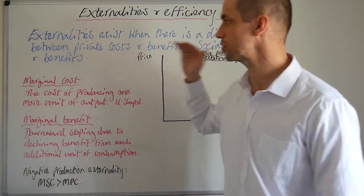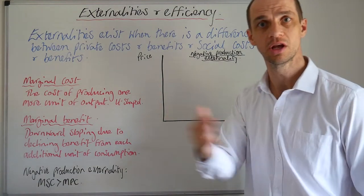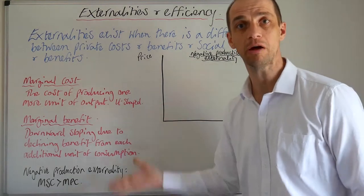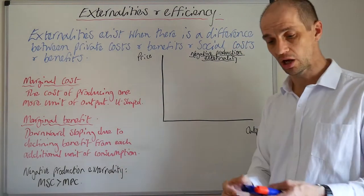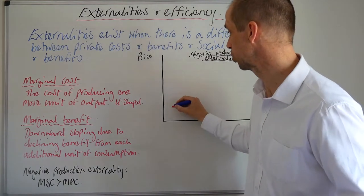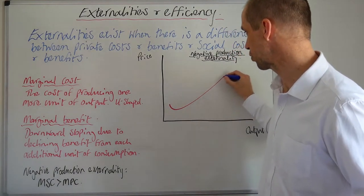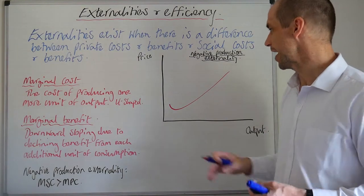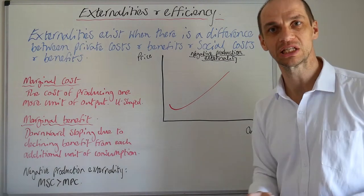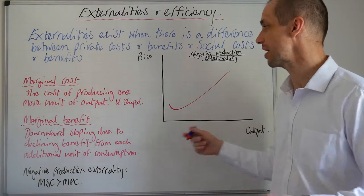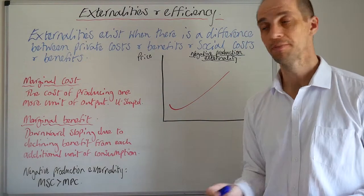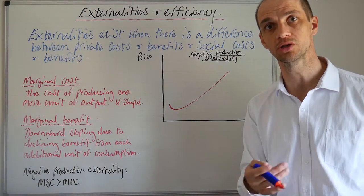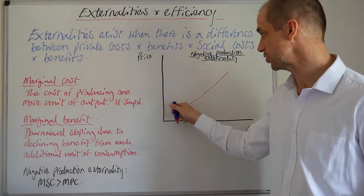When it comes to the actual marginal cost, we need to understand these diagrams before we actually look at them in detail. The cost of producing one more unit of output. Now, initially, marginal costs of production will decrease as you increase output.